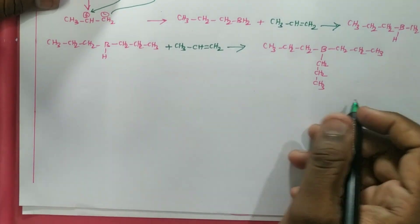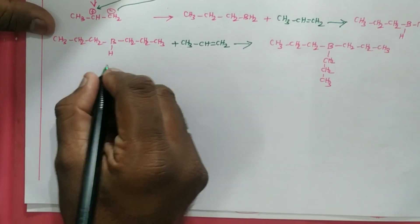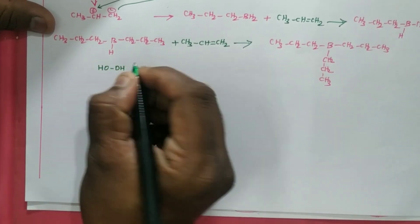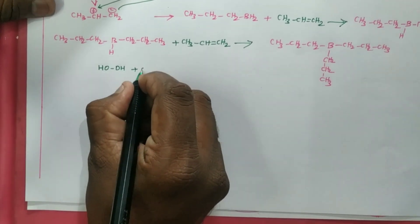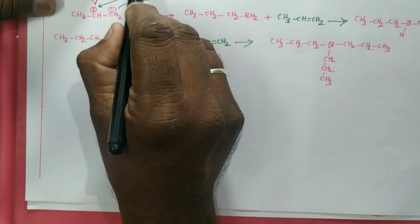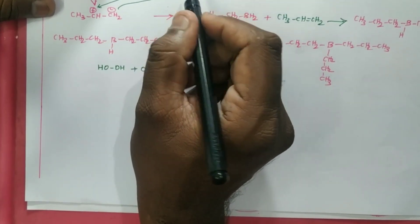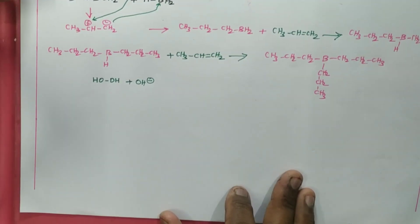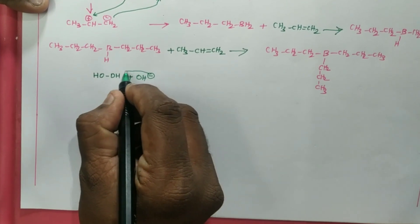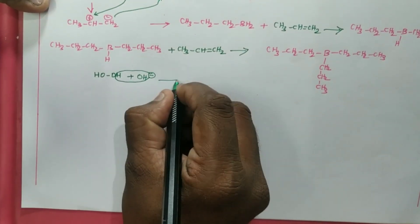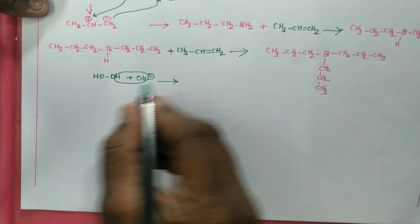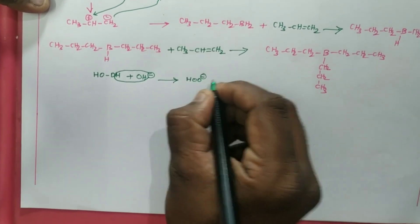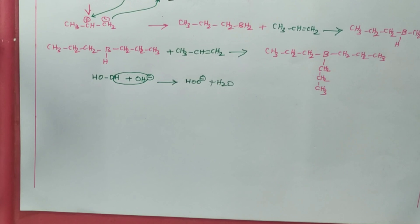Now hydrogen peroxide (H2O2, i.e., HO-OH) is going to react with our base OH⁻. We have taken both OH⁻ and hydrogen peroxide. The OH⁻ picks up a hydrogen from H2O2 — deprotonation takes place — and a water molecule is eliminated, forming HOO⁻ along with water.